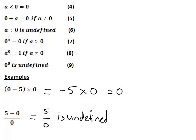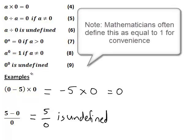The last three properties of 0 listed here that are useful: 0 raised to the power of any positive number a is equal to 0. a to the power of 0 is 1, provided a is a non-zero number. And if a was 0, we would have 0 to the 0, which is undefined.